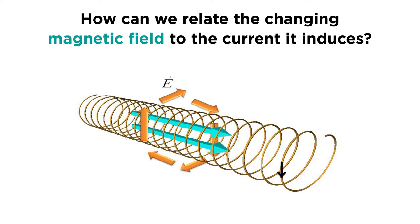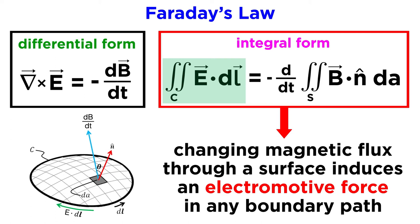But how can we relate the changing magnetic field to the current it induces? Note the statement in the first part of the integral form. A changing magnetic flux through a surface induces an electromotive force in any boundary path of that surface. The boundary path can be practically anything, but it is convenient to use symmetrical objects in practice due to their simplicity.